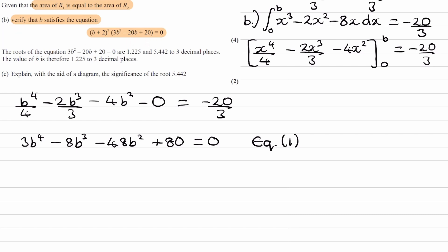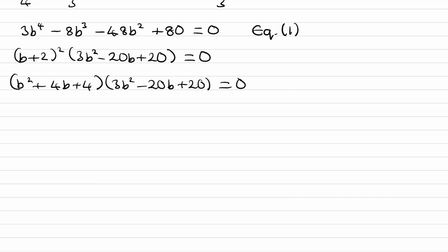Expand out the b plus 2 squared. I'll start with the b plus 2 squared, so that would be b squared plus 4b plus 4 times this. Now we're going to multiply this whole thing out. Let's start with the b to the power of 4 term. These two times together give you b to the power of 4, so that would be 3b to the 4. Next, for the b cubed terms, we can do b squared times this, so it'd be b squared times minus 20b, which would be minus 20b cubed, and then we can do 4b times 3b squared.